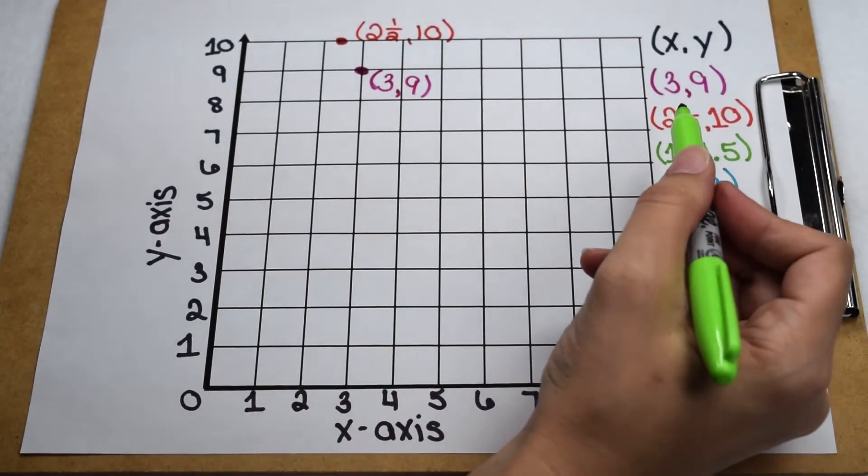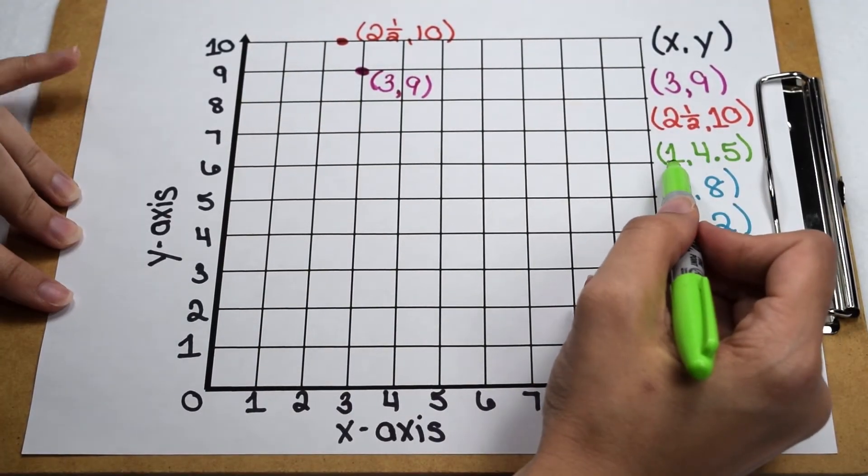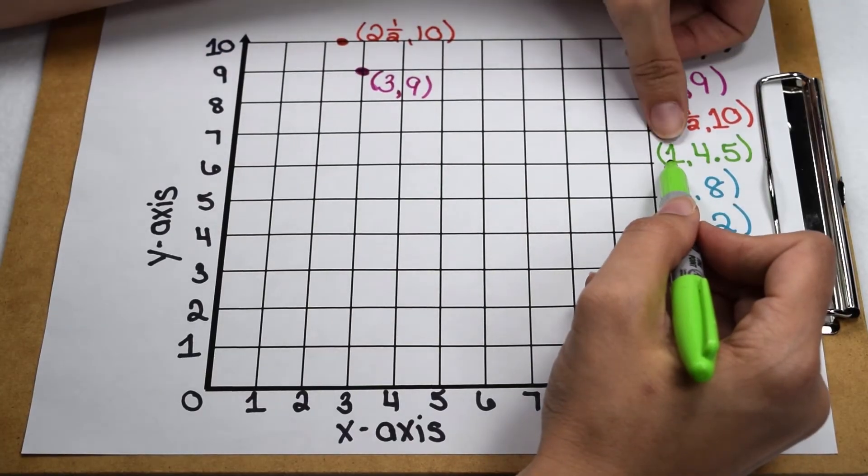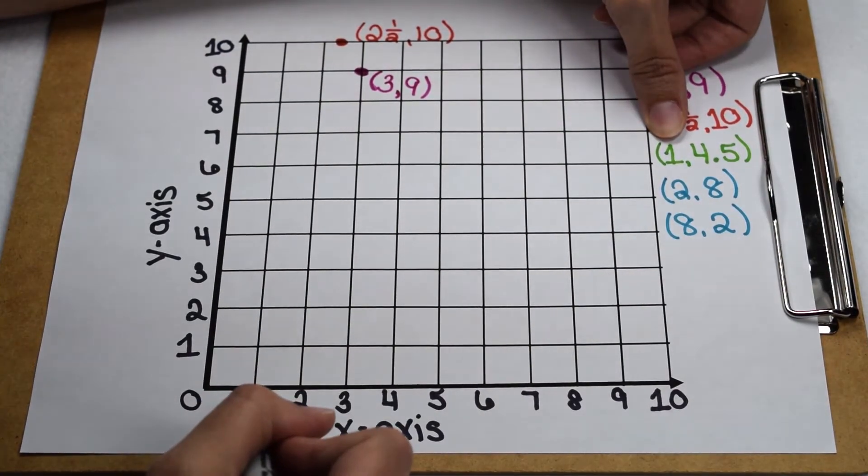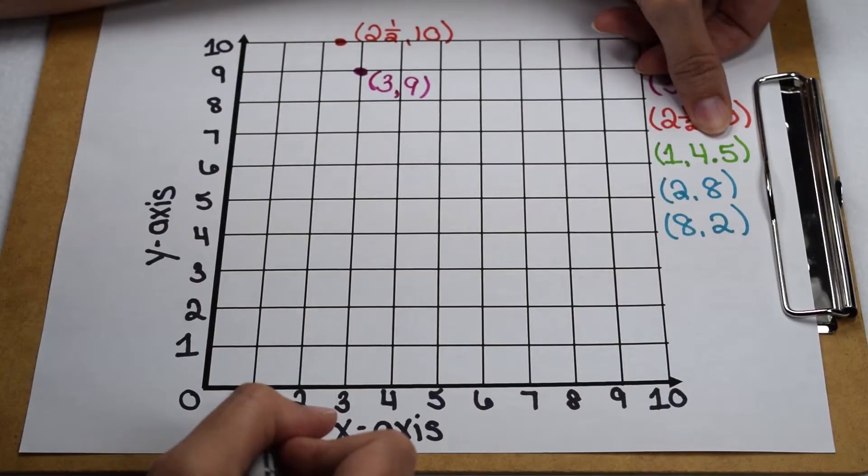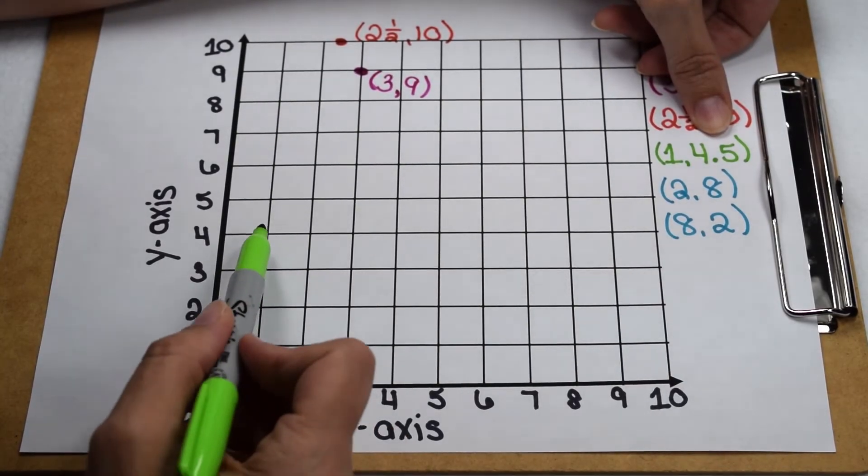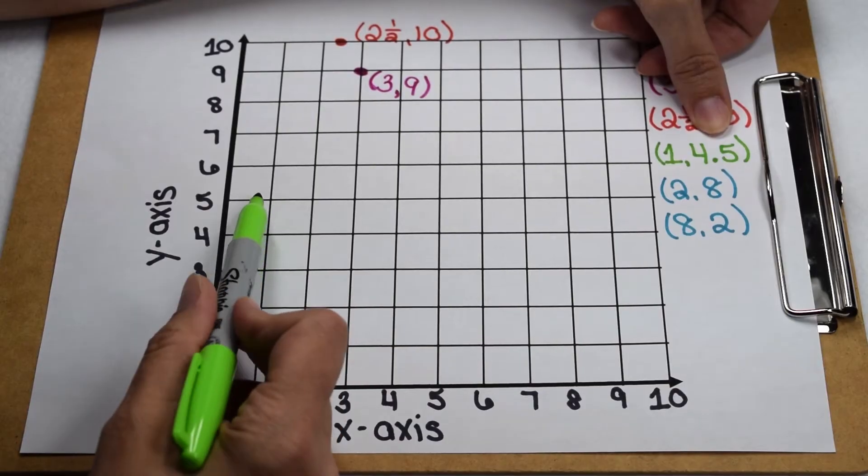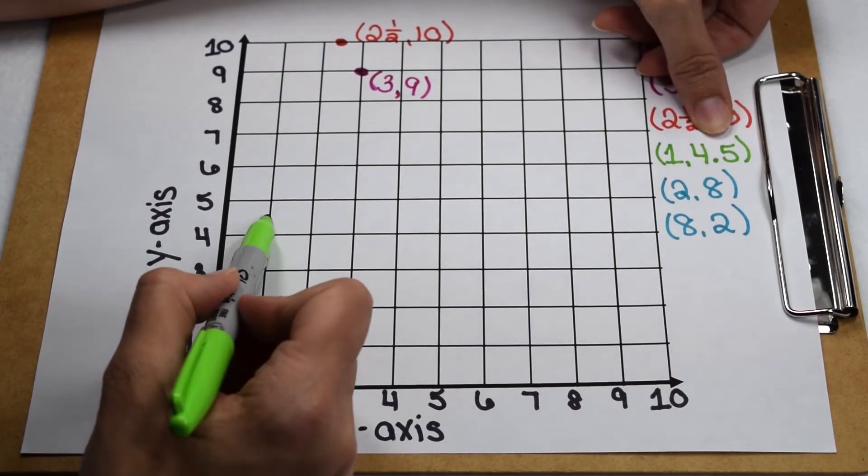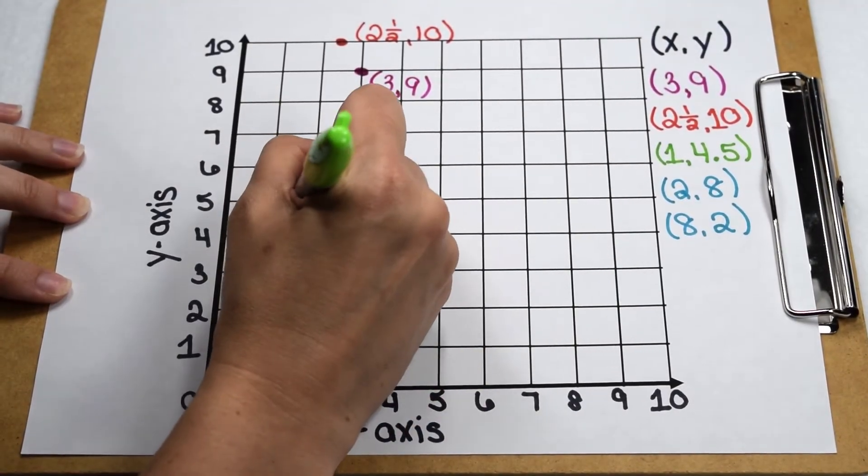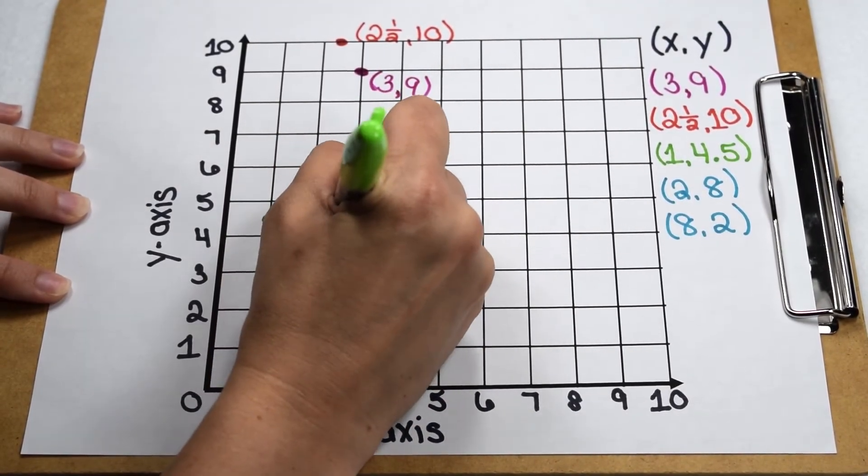If I'm working with decimals, the same rules are going to apply. I'm going to plot my point. To do this, I'm going to go across one place on my x-axis. For my y value, we're again going to have to do some estimating, since our y value scale is in whole numbers. Four and five tenths is going to fall midway between four and five. So I can make my point about there. We can then label it one, four and five tenths.